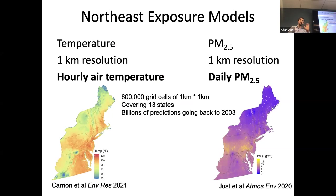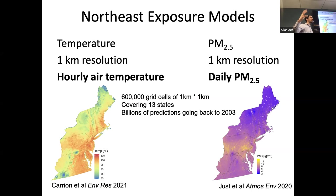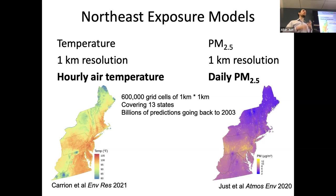On the left is the temperature model, and we also had a daily Northeast PM2.5 model covering broader regions. Once you start to cover broader regions, you can link not just to cohorts like the one in Mexico City where a few hundred or thousand people specifically enrolled, but you can start to link into registries, population-based data sets, and demographic information — pulling social variables from sources like the American Community Survey or the Census Bureau.